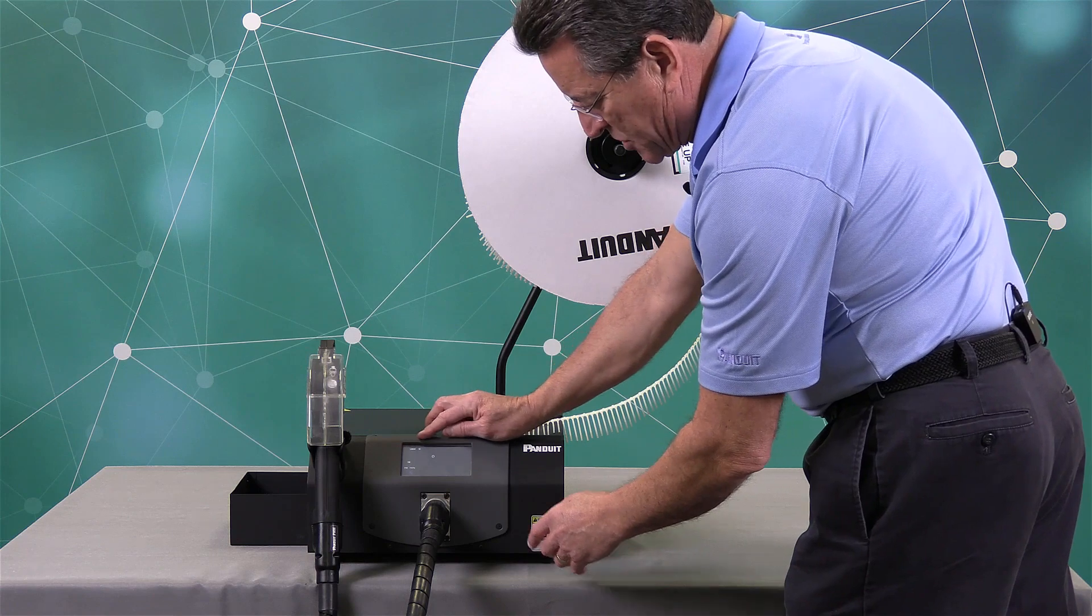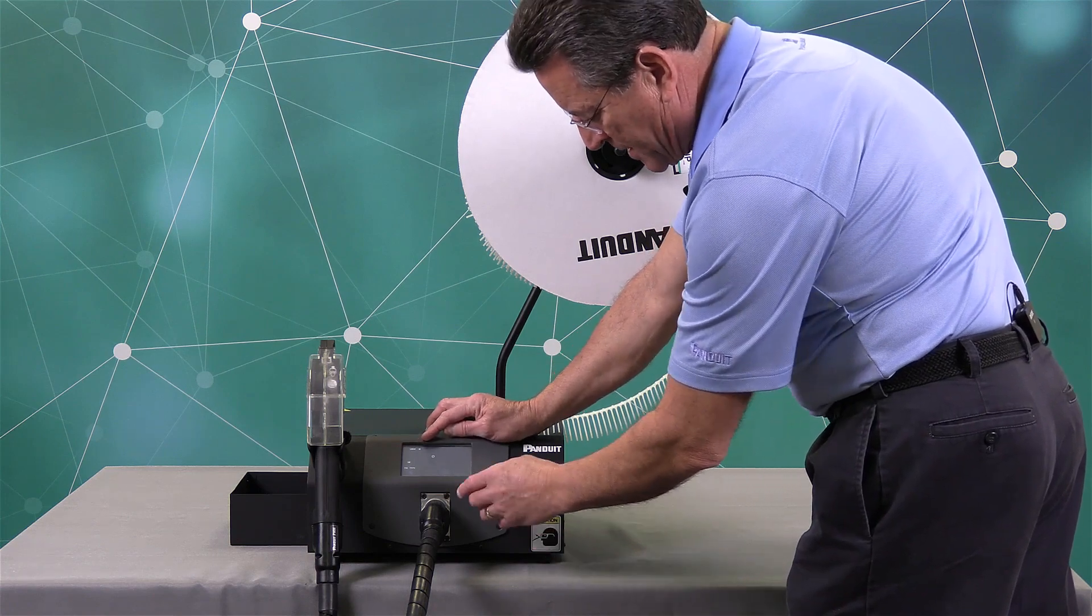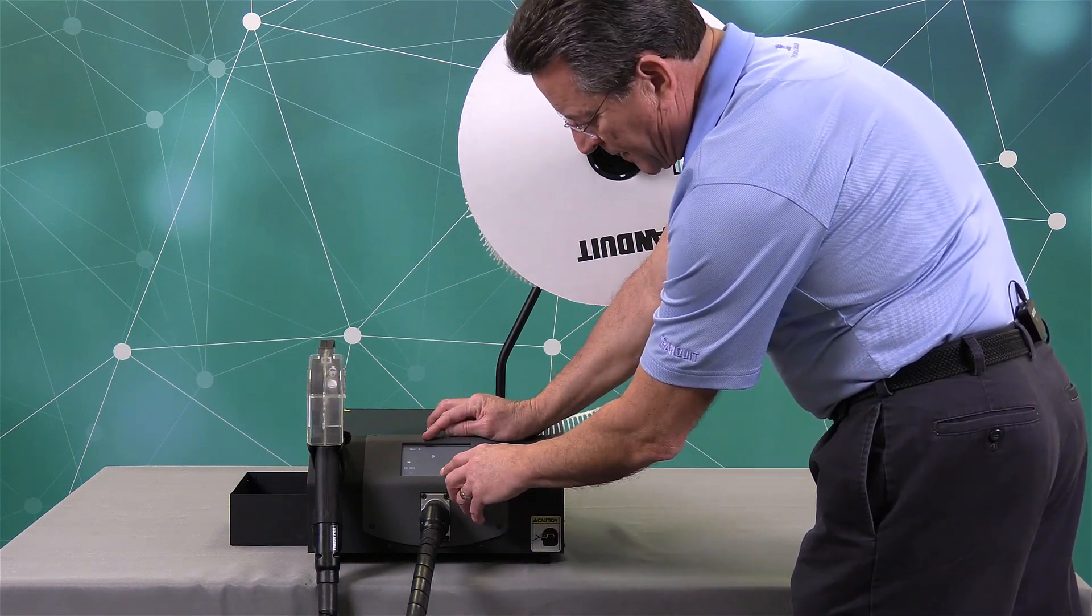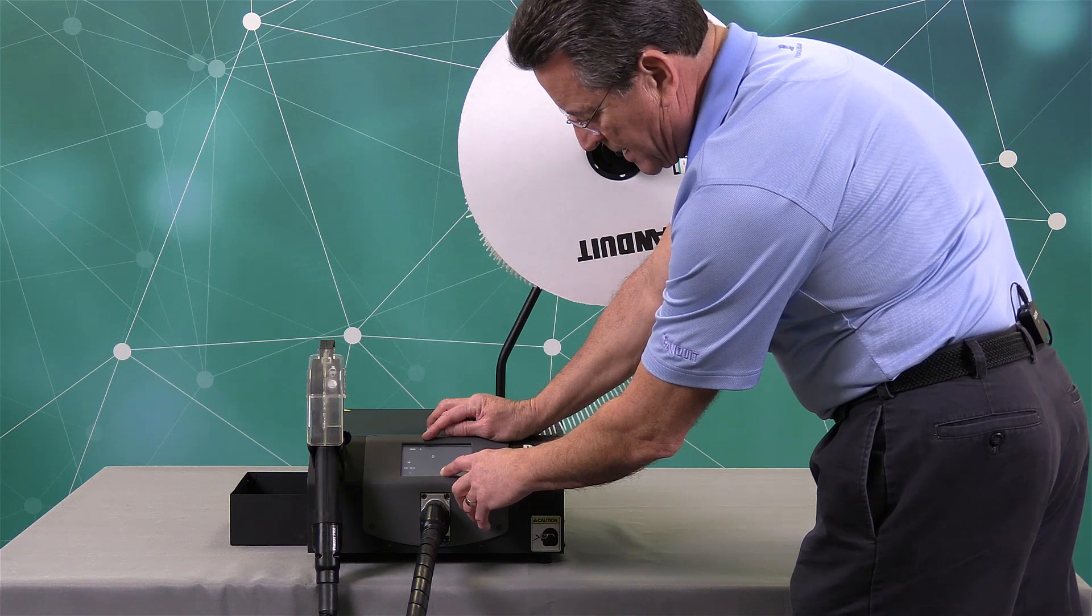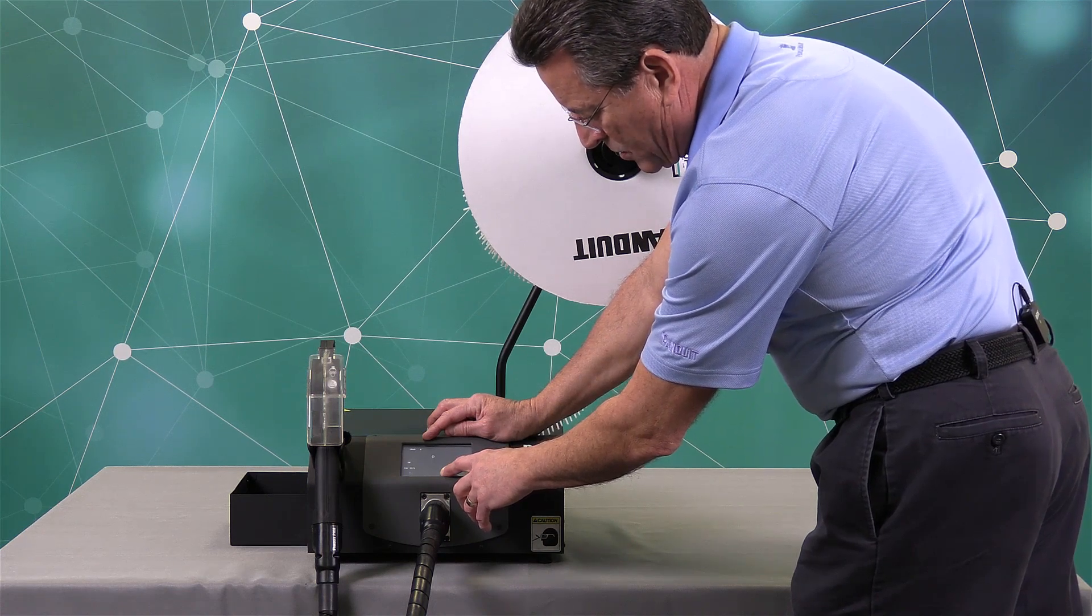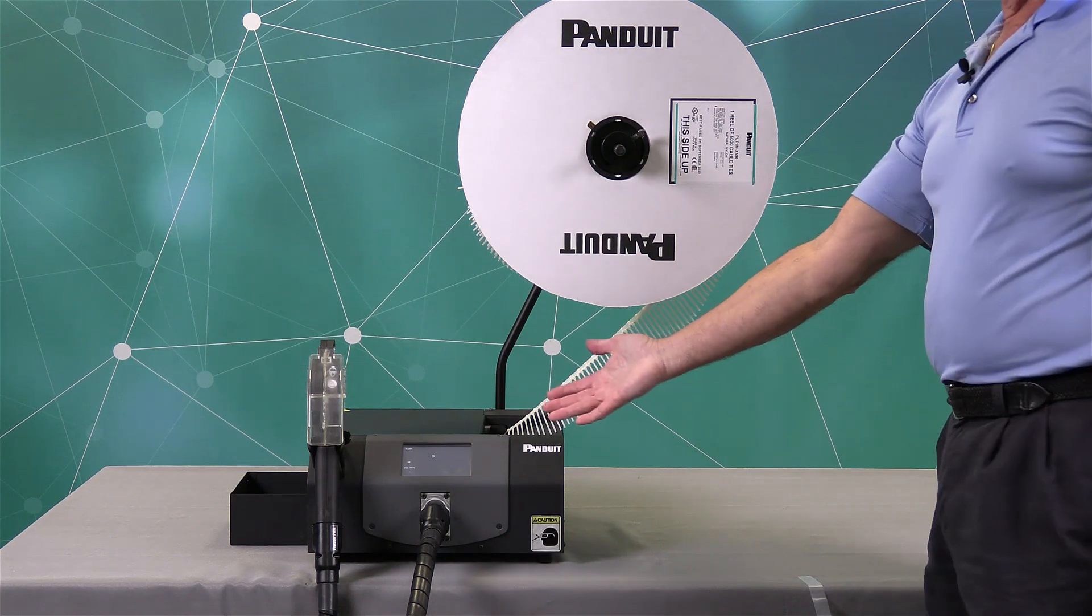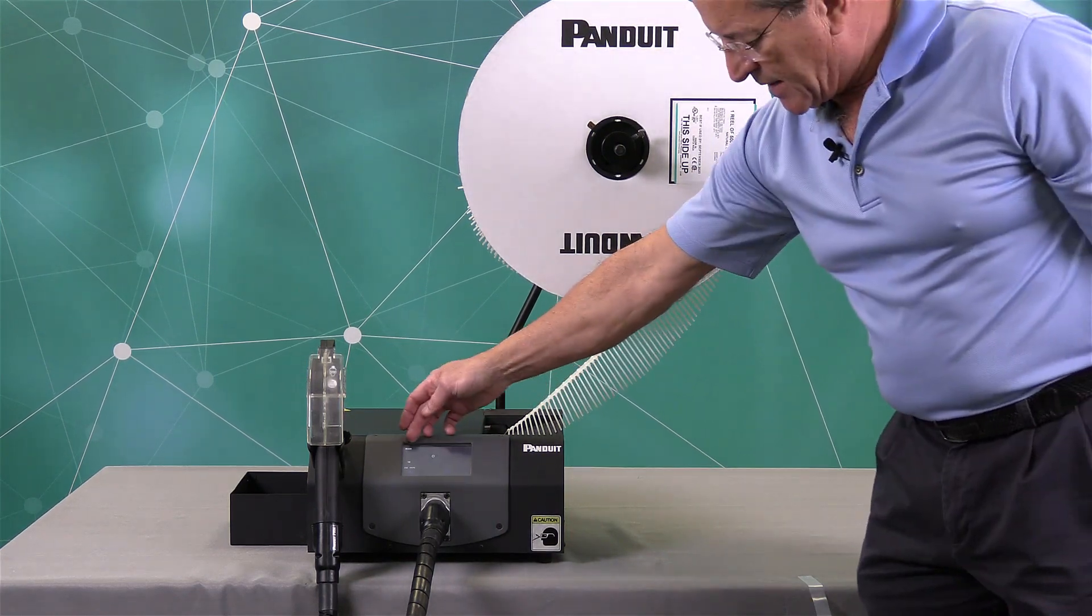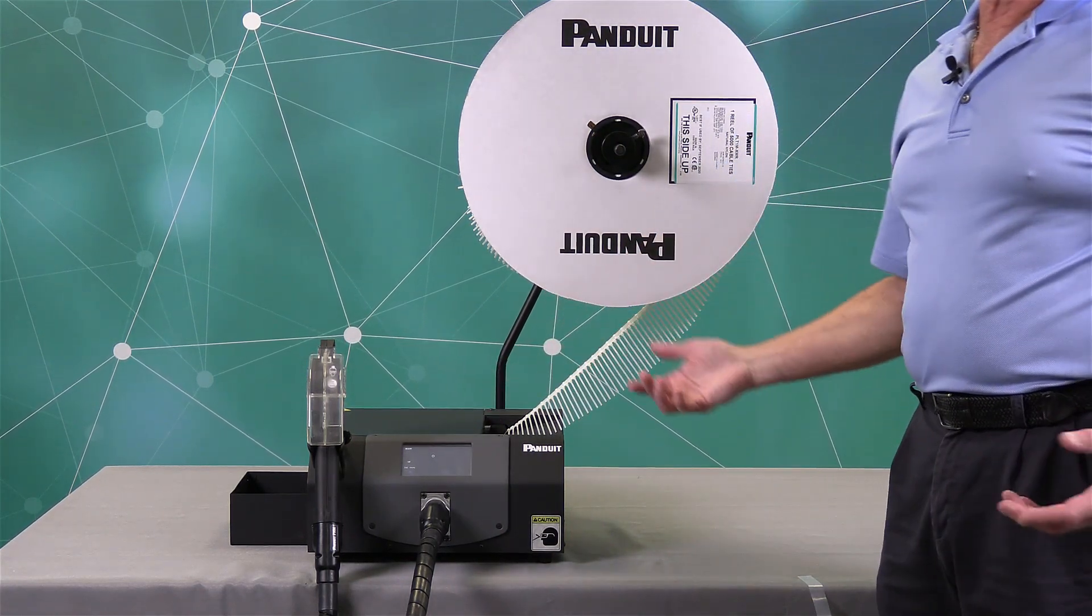And there is a ribbon on the top that starts at load 14, this green ribbon. So when I tap the load button, it's actually counting down from 14 down to zero. Once it successfully takes in 14 ties, it says ready on that ribbon on the top. Now you're ready to go.